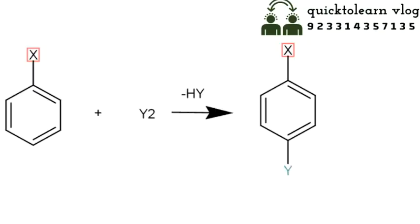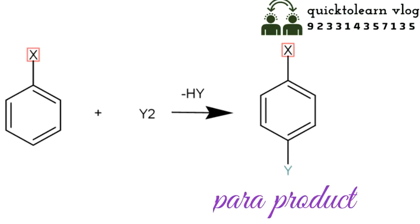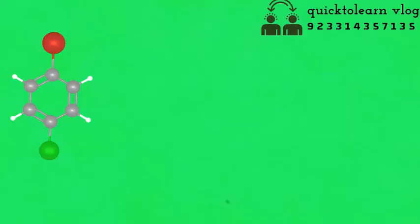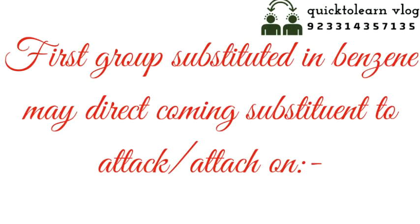When X-substituted benzene is substituted again by Y, and Y is present directly opposite to X, that is called the para product. This is the para isomer in which carbon number one and carbon number four are substituted. The first group substituted in benzene may direct the incoming substituent to attack or attach at the ortho, para, or meta position.